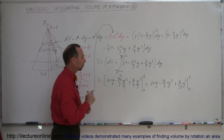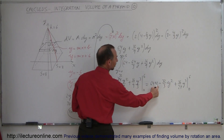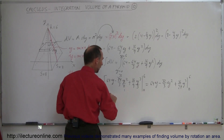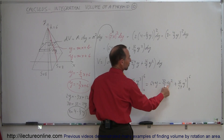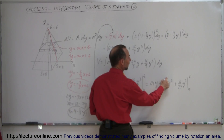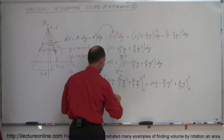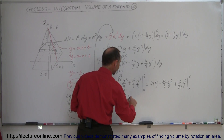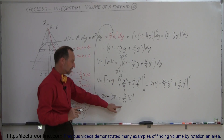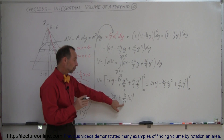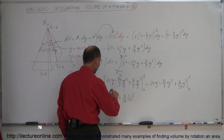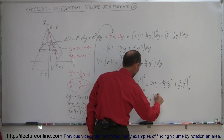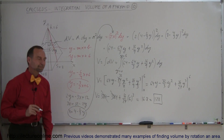Let's plug in the limits. When we plug in the lower limit we get nothing but 0, so we only need to substitute the upper limit y equals 6: 6 times 64 is 384, minus 36 divided by 3 is 12, times 32 is 384, plus 16/27 times 6³ — 6³ is 216, divided by 27 goes exactly 8 times — so 16 times 8 is 128. We get 384 minus 384 plus 128, which equals 128. That is the volume of the pyramid.